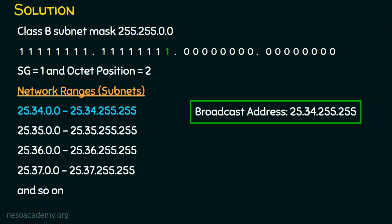The IP address of one of the hosts is given in the question, and we found that 25.34.255.255 is the broadcast address of this entire network. This is one way of solving this, and this approach is the reverse engineering method.